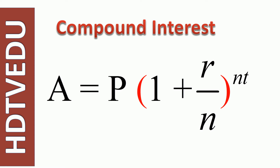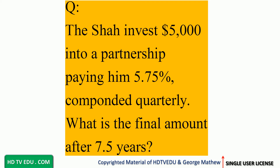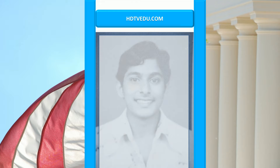Compound interest problem: Shah invests five thousand dollars into a partnership paying him five point seven five percent compounded quarterly. What is the final amount after seven and a half years? Welcome to hdtbedu.com — direct and simple education in seconds.